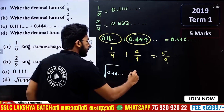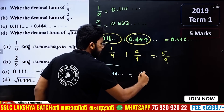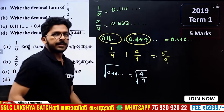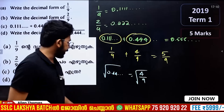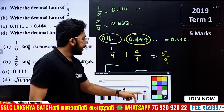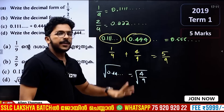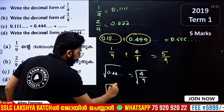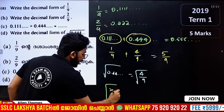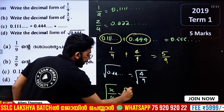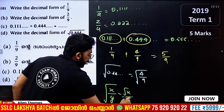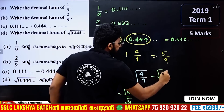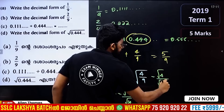4 by 9 is equal to 0.4444... The root of a fraction: root of (x/y) equals root x divided by root y. So the square root of 0.4444 is root 4 over root 9, which gives root 4 equals 2 and root 9 equals 3.